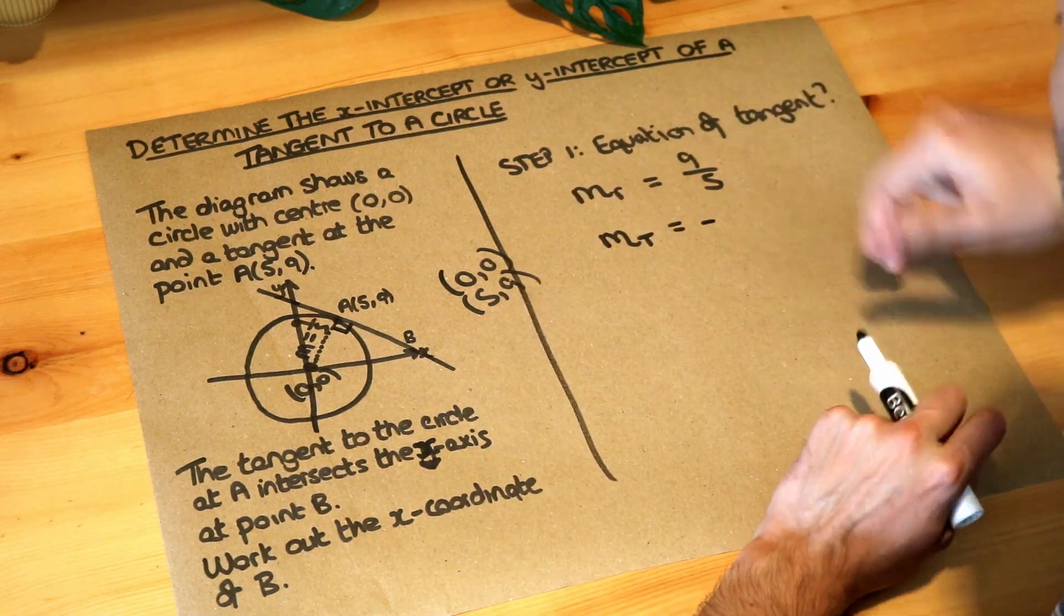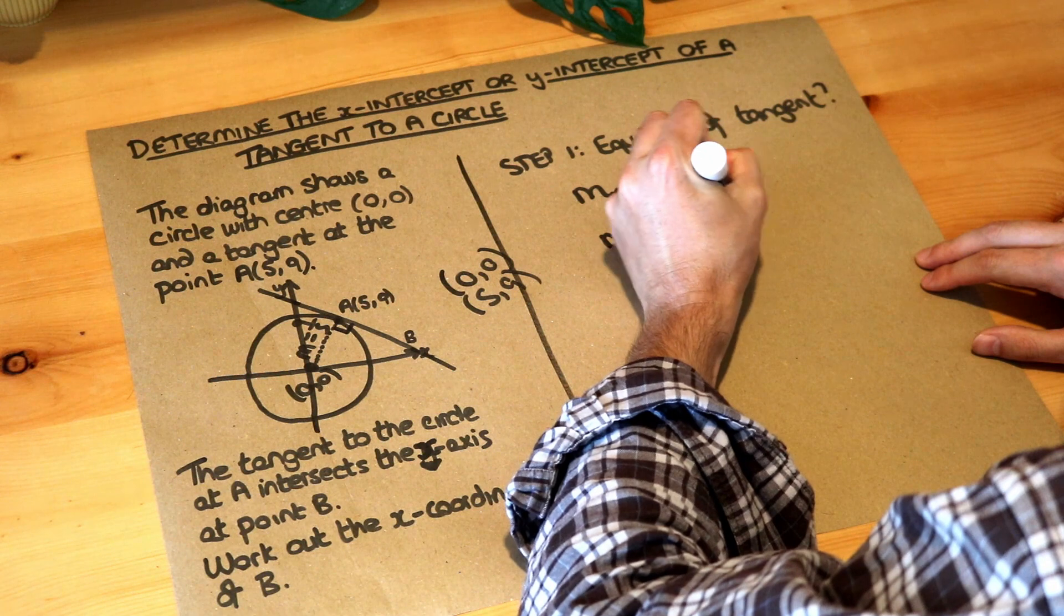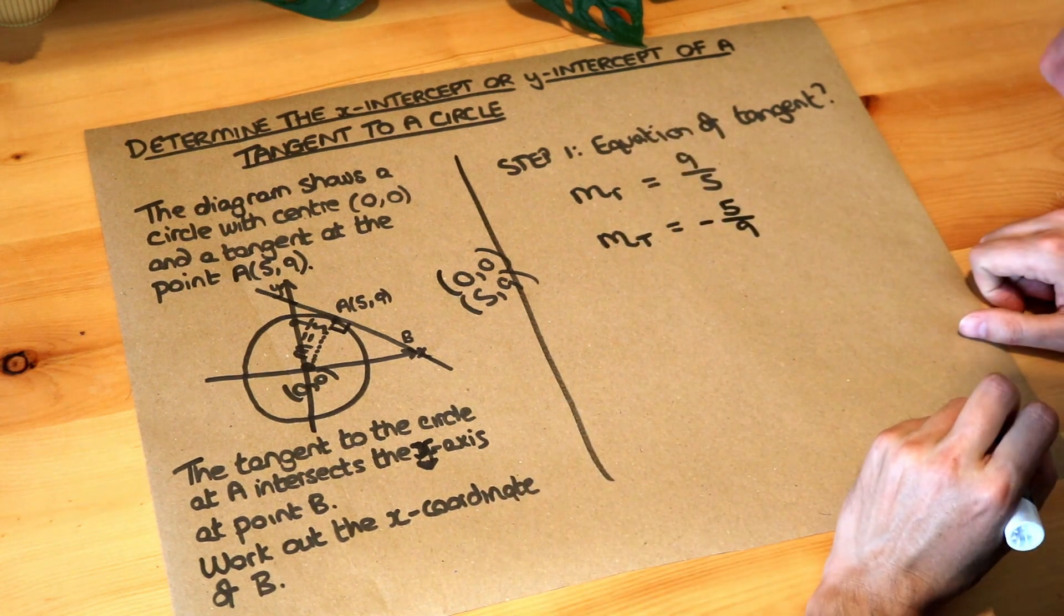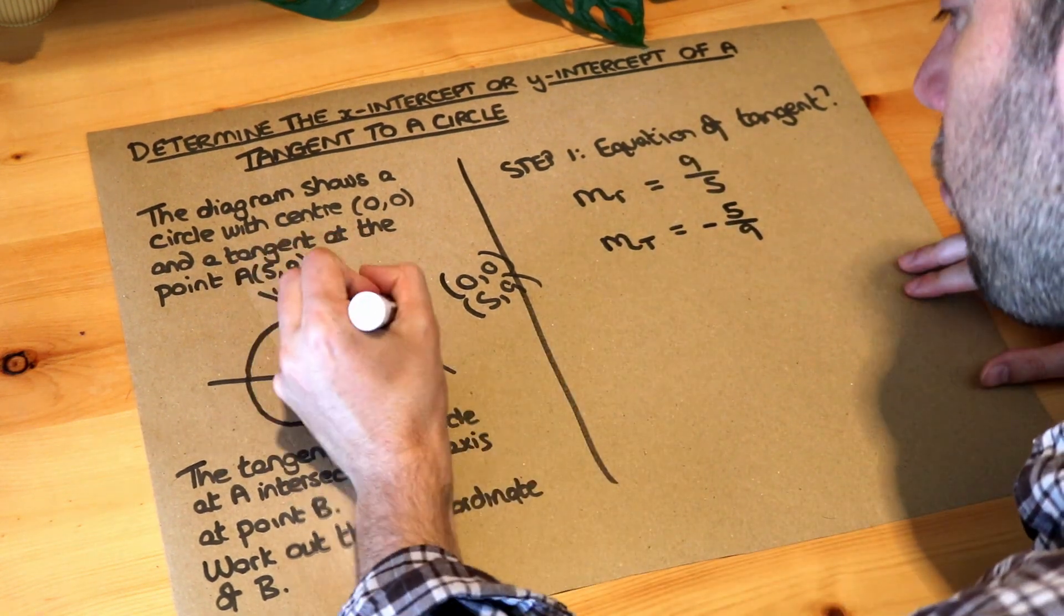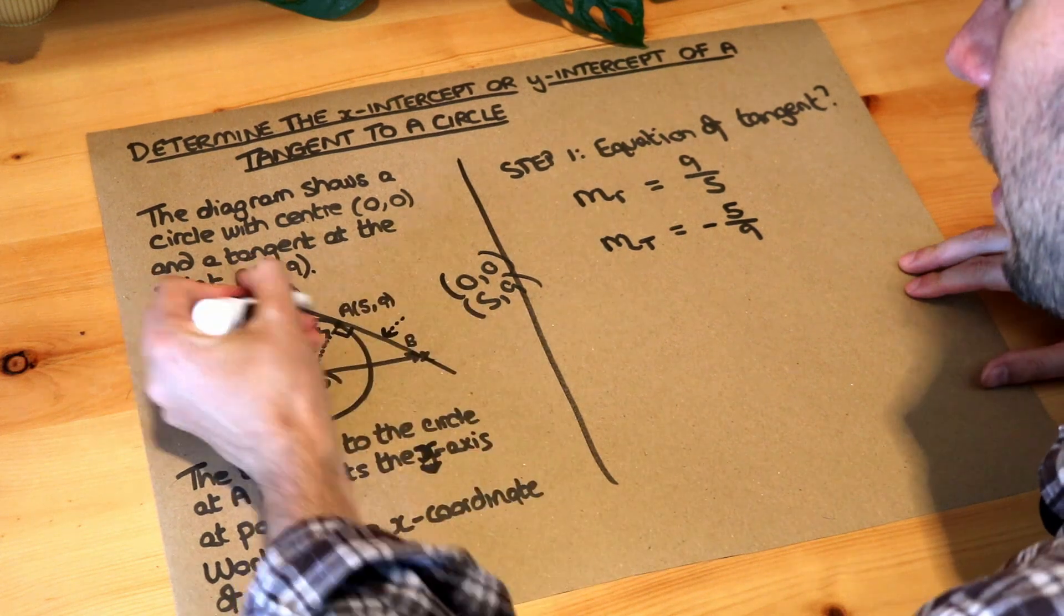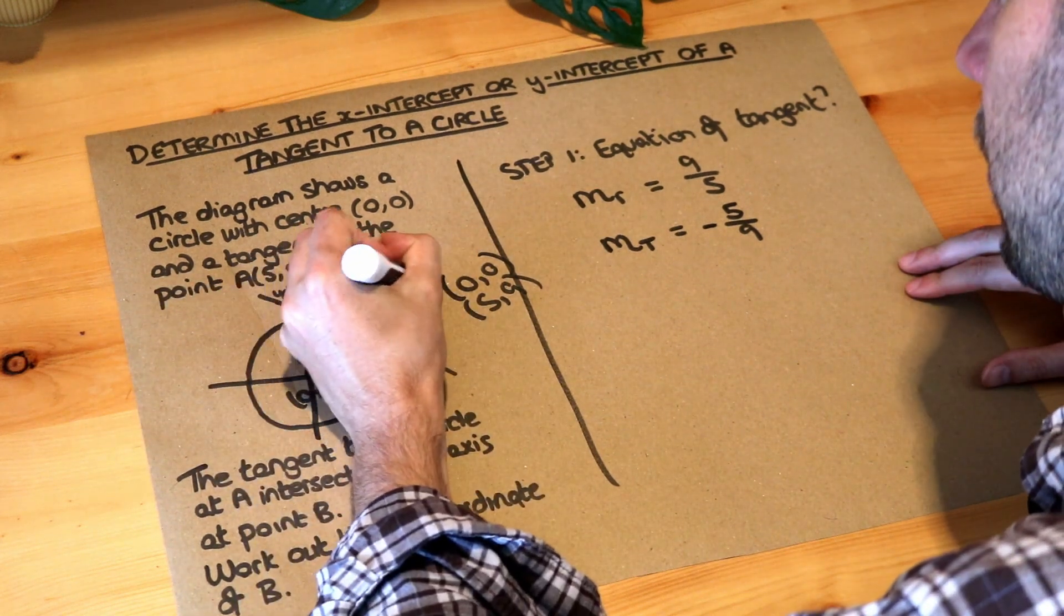To find the reciprocal of a fraction, you just flip it upside down. We do 1 over it, which flips upside down, and we get that. So we now have the gradient of this tangent, which is minus 5/9.